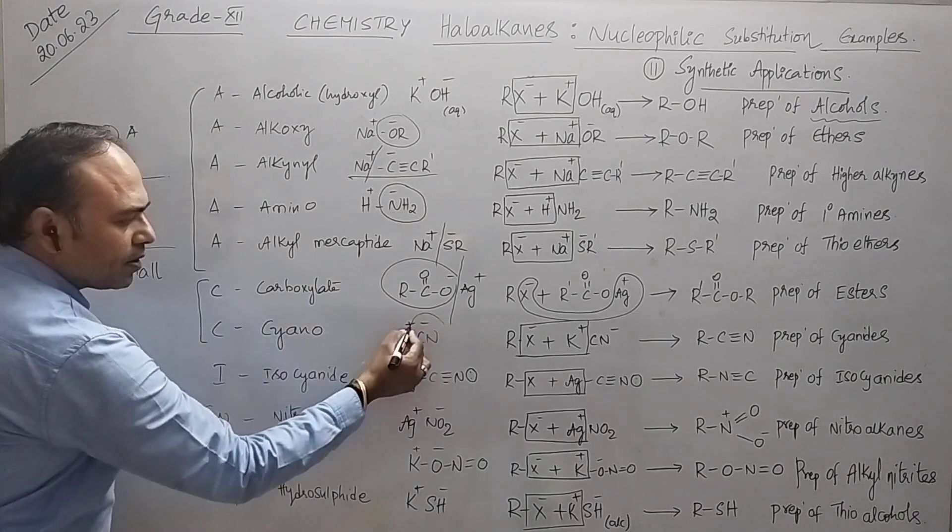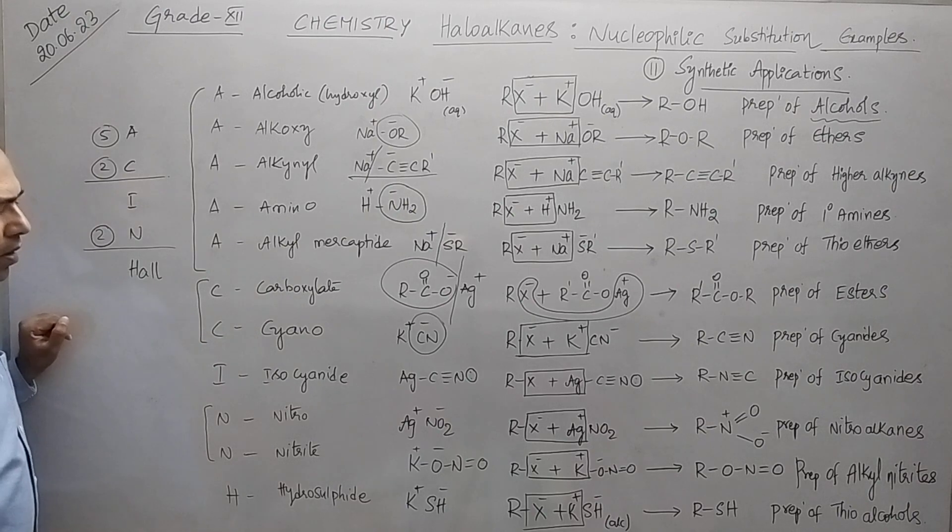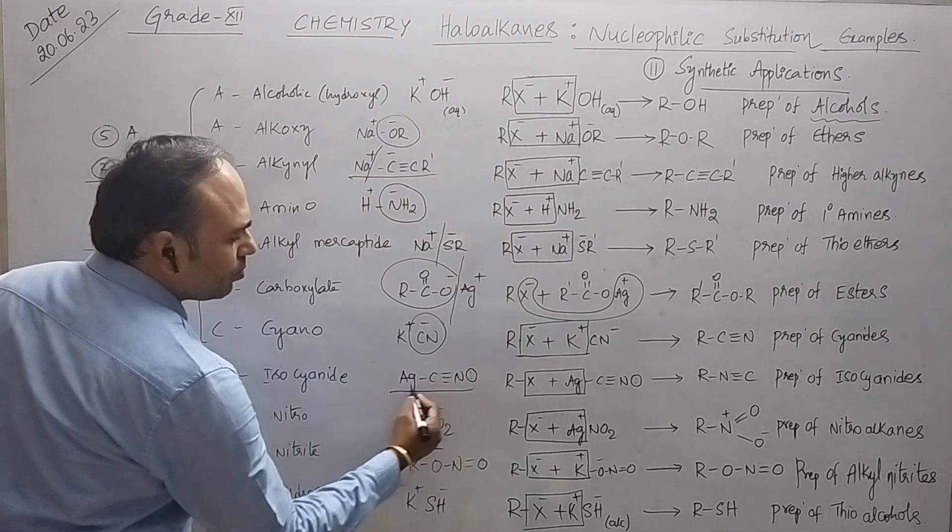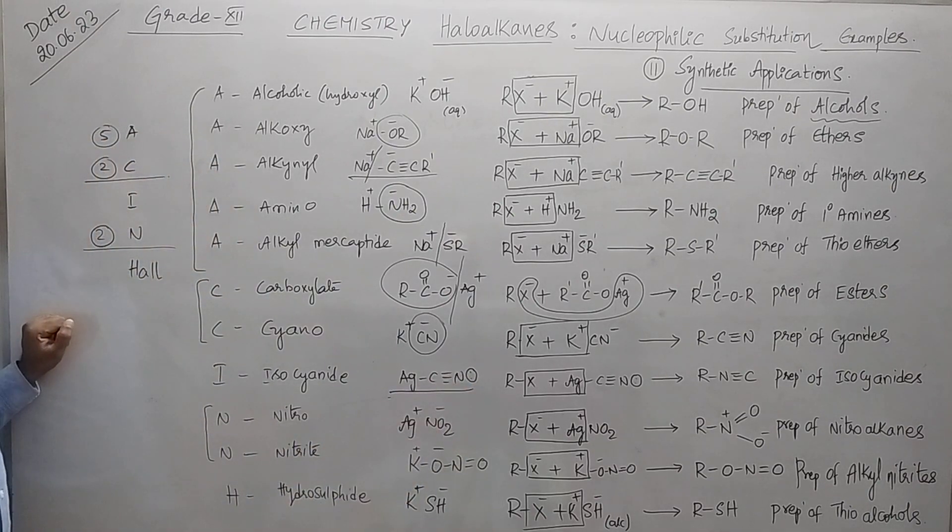Silver salt of carboxylic acid. So from this you can take nucleophile. After this, the next two compounds: potassium cyanide, so cyanide group CN minus is the nucleophile.